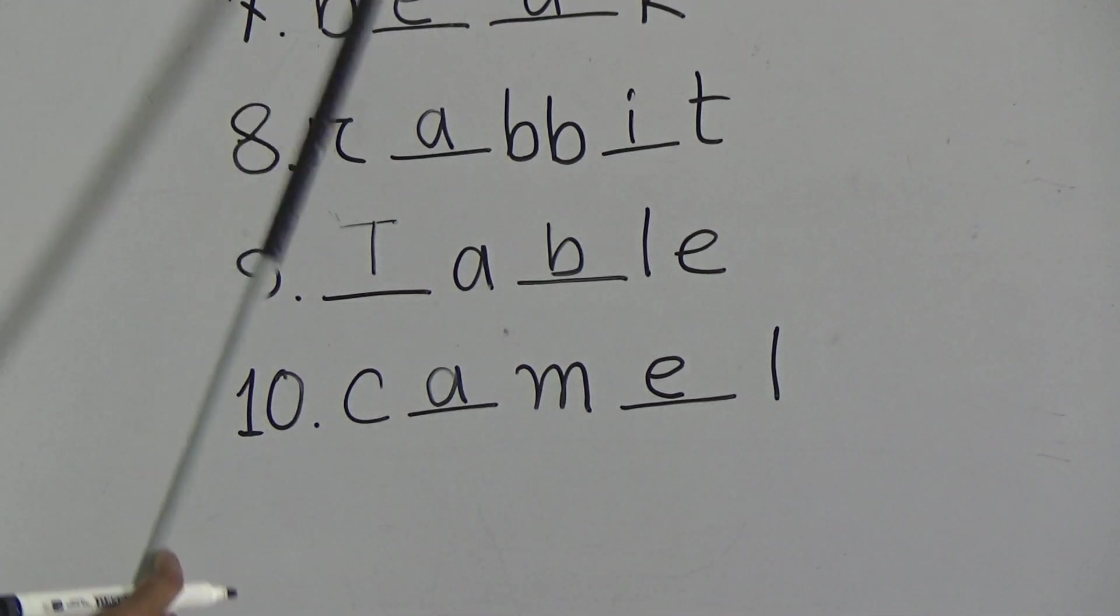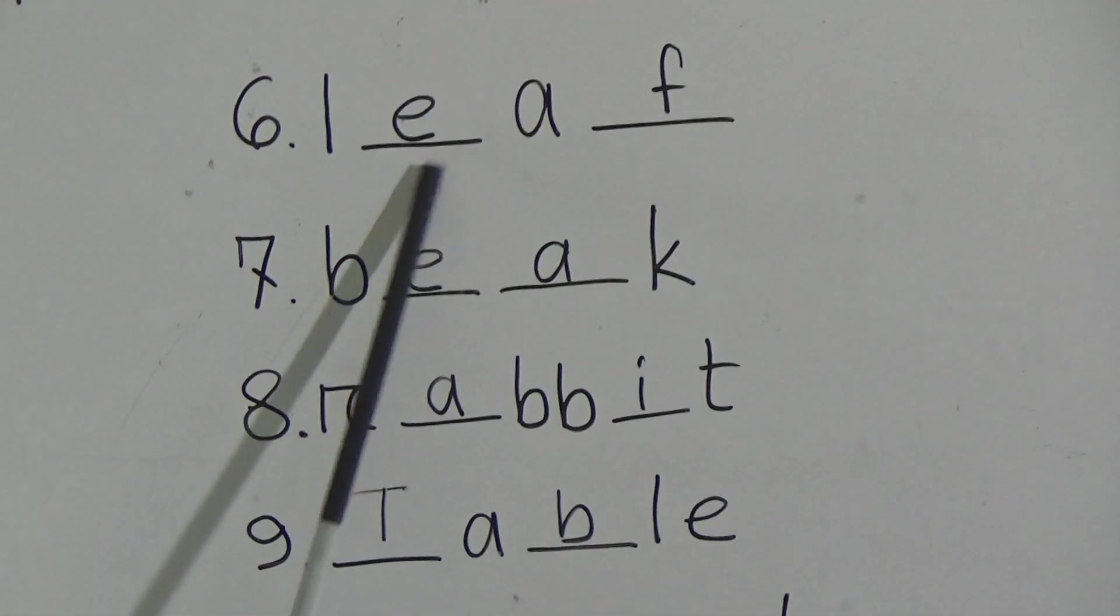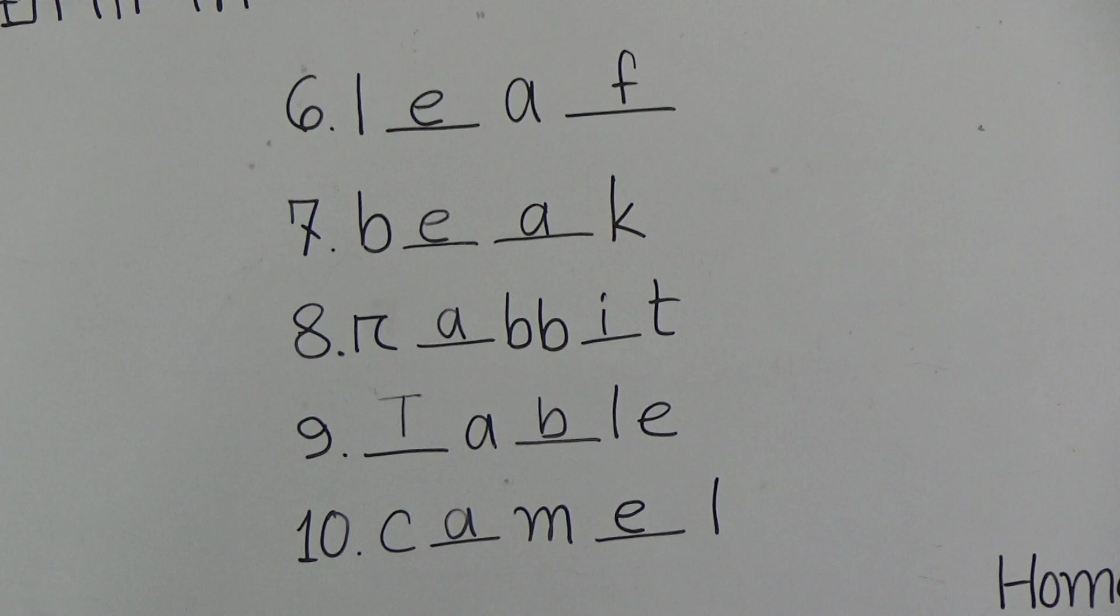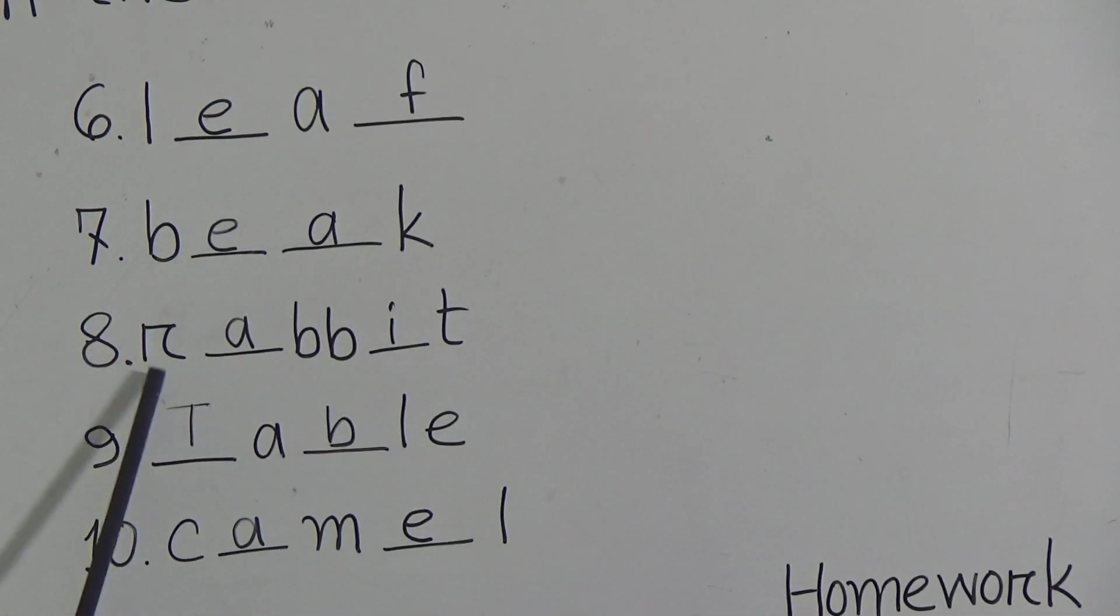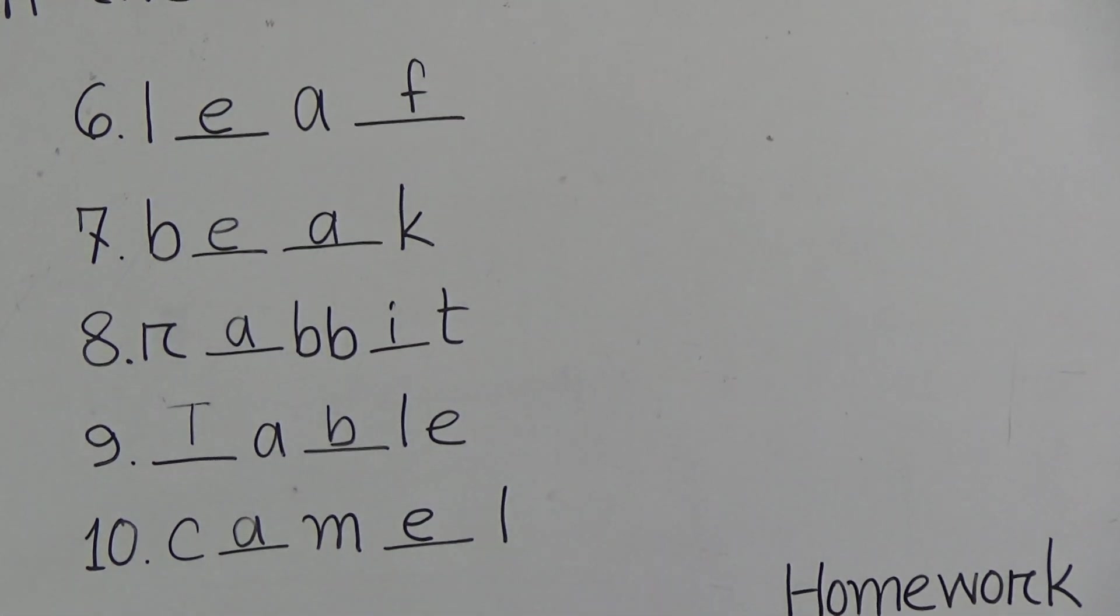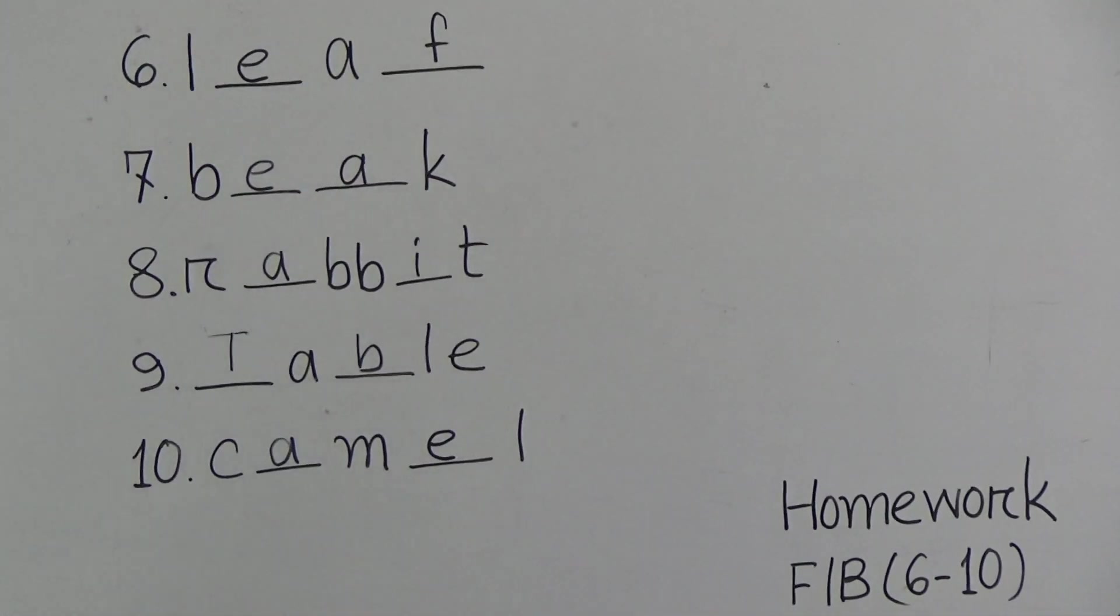Okay, now again say with me and spell with me: L-E-A-F, leaf. B-E-A-K, beak. R-A-B-B-I-T, rabbit. T-A-B-L-E, table. C-A-M-E-L, camel.